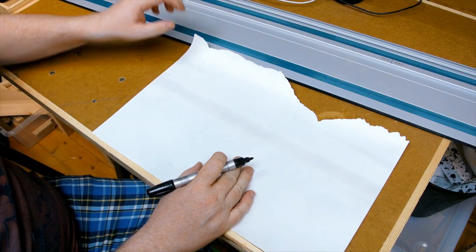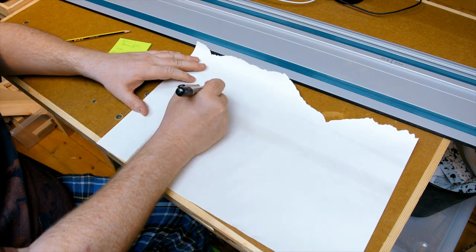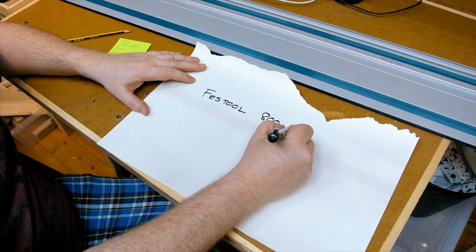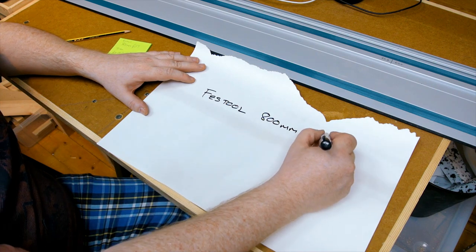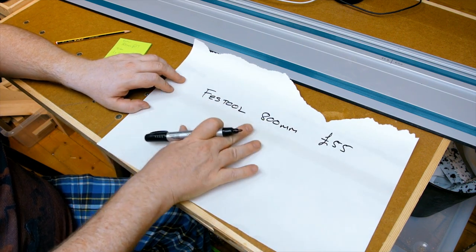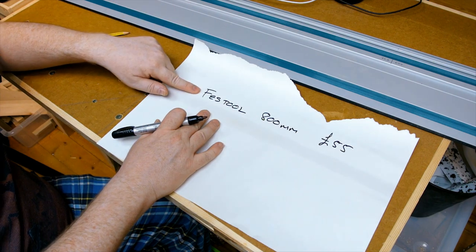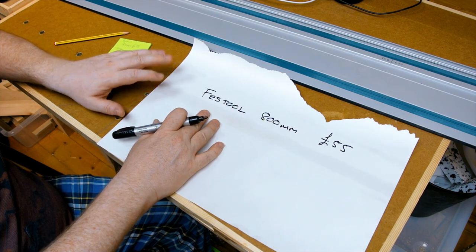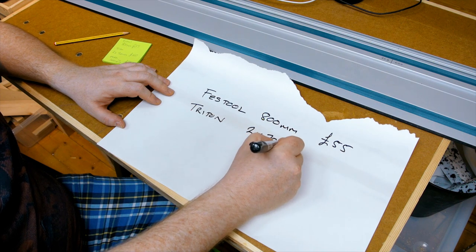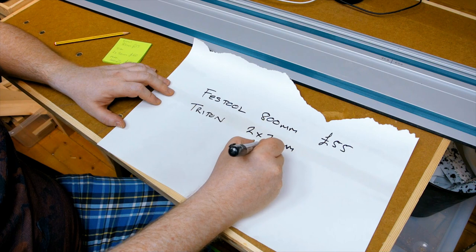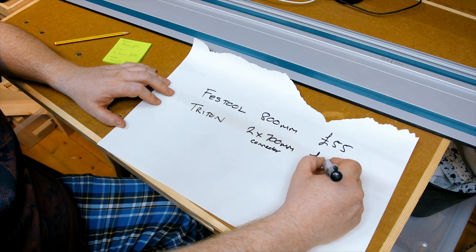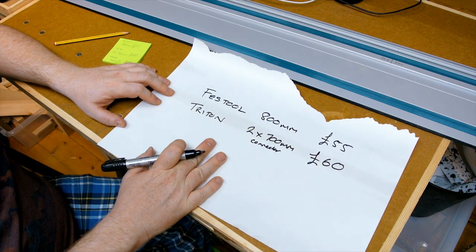So looking into this, what I found was that Festool do an 800mm short guide rail and in the UK the cheapest price I could find was on Amazon at £55. Now the Makita guide rail and the Festool guide rails are compatible with other brands as well, and another UK brand is Triton. They do a two by 700mm rail system with connector, and that comes in at £60 in the UK, again cheapest on Amazon. And obviously if you've got Amazon Prime that includes delivery.